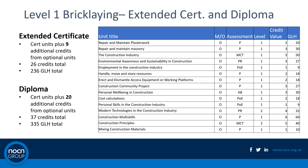Moving on up to the Extended Certificate and Diploma — larger qualifications — you follow the three units completed for the Certificate, plus nine additional credits from the optional units. We've included popular and requested content such as environmental awareness, employment in the construction industry, costing a job, personal skills, modern technologies, and one that we seem to be asked for most recently: personal well-being. The intention with these optional units is to provide learners with a rounded skills and knowledge set. Learners can complete 20 credits from this bank to gain a Diploma at Level 1.